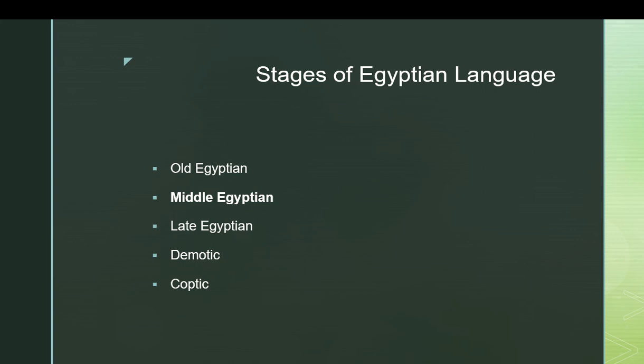That's pretty much all we need to cover on Egyptian history and the history of the language, so we're going to jump right into Egyptian in the next video. We're going to start with the alphabet, which is probably going to be a little more complicated than other alphabets you may have learned.